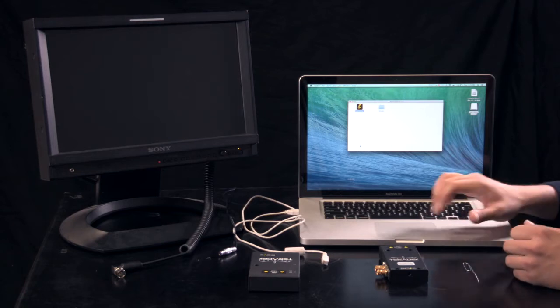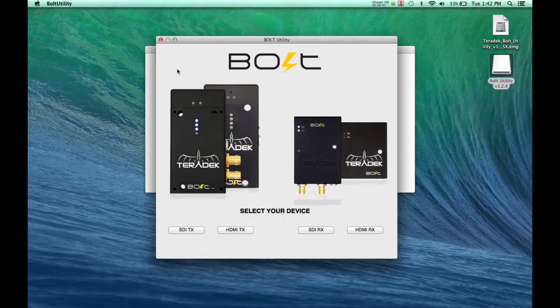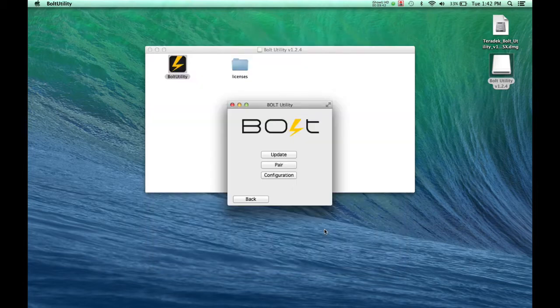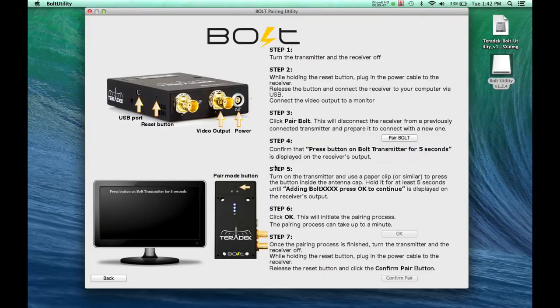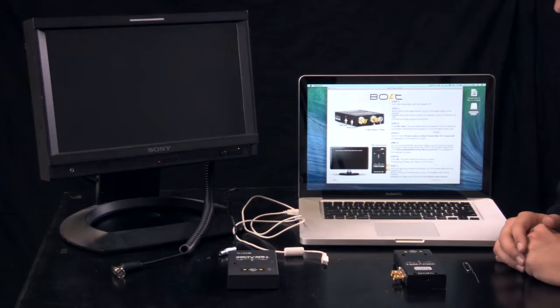The next step is to pair the units. Re-open the Bolt utility. Select your receiver type and click Pair. Step 1: Make sure your transmitter and receiver are both off.